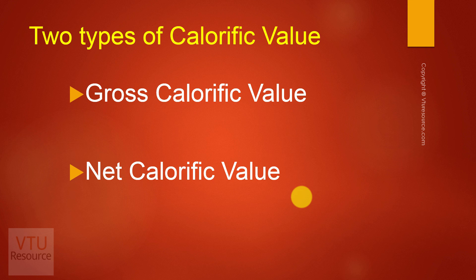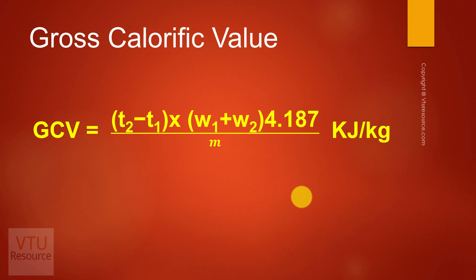For gross calorific value, we get both the energy present in the fuel as well as the amount of energy liberated when water vapor is condensed to liquid water. For net calorific value, we get only the energy liberated by the fuel burnt. GCV or gross calorific value is given by: (T2 − T1) × (W1 + W2) × 4.187 / m kilojoules per kg.